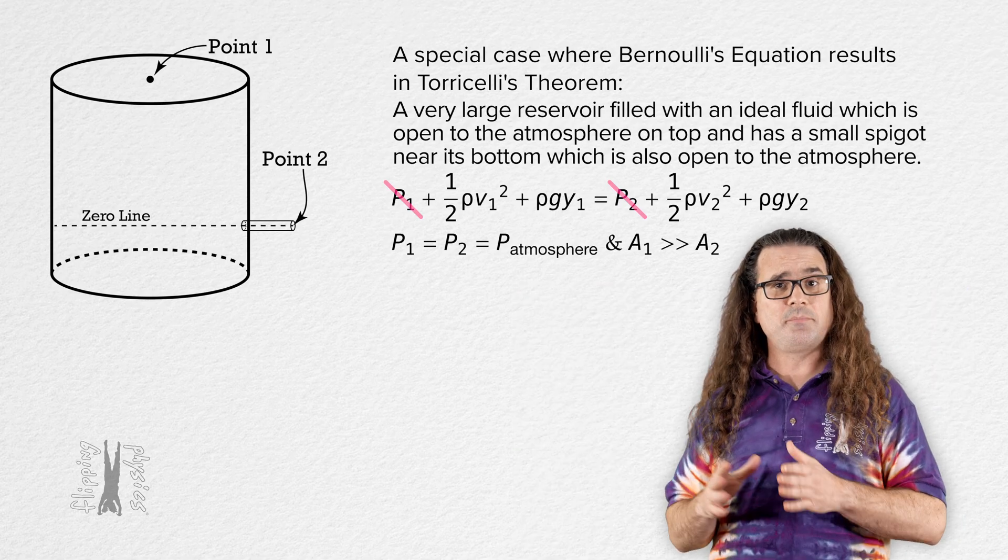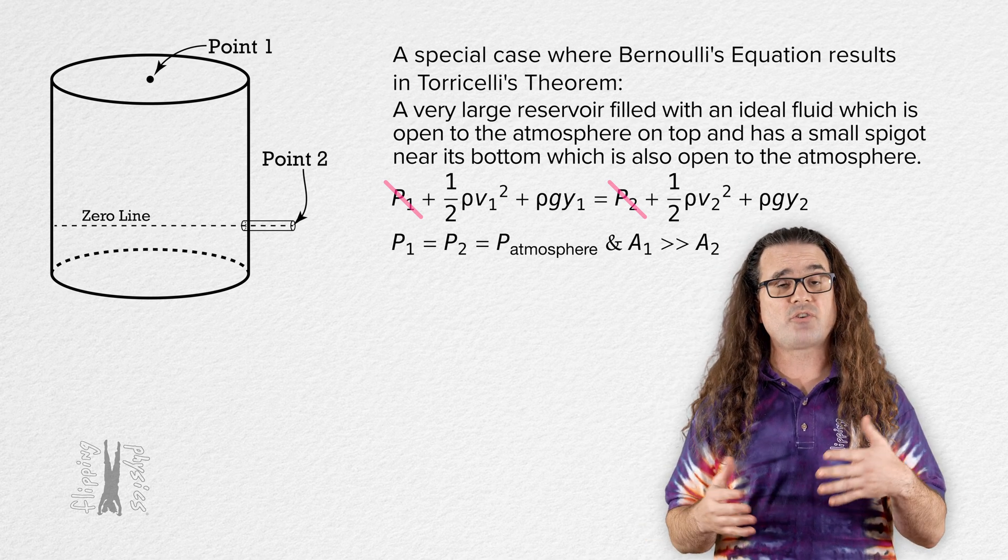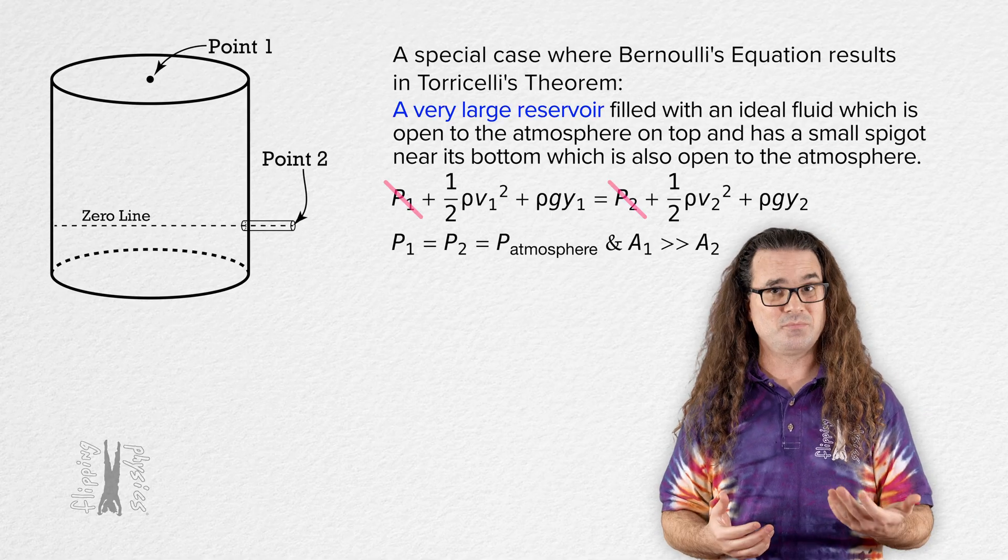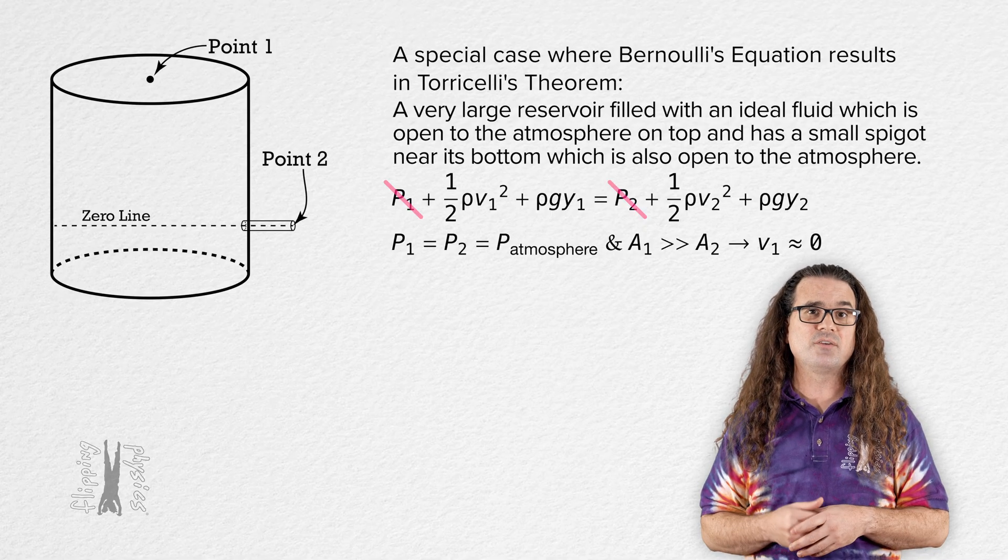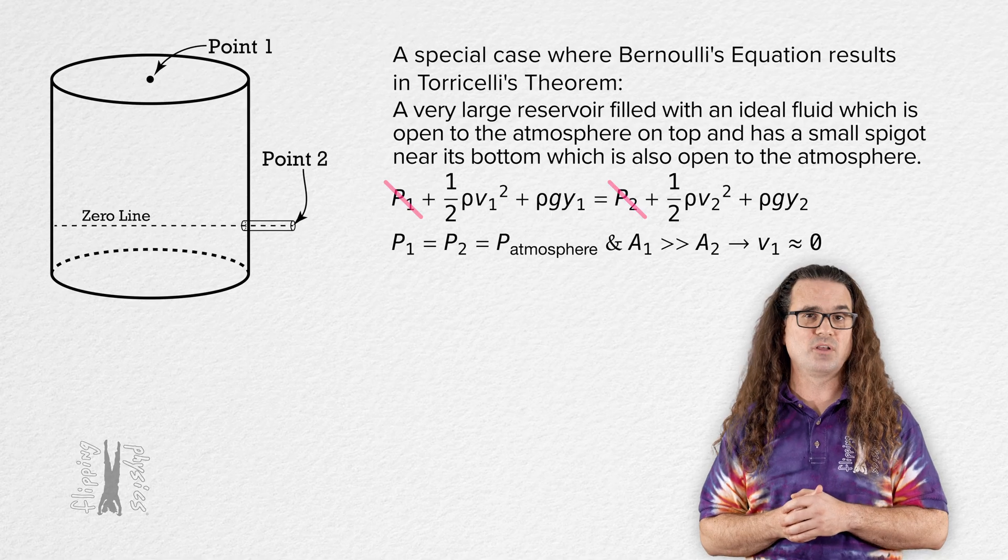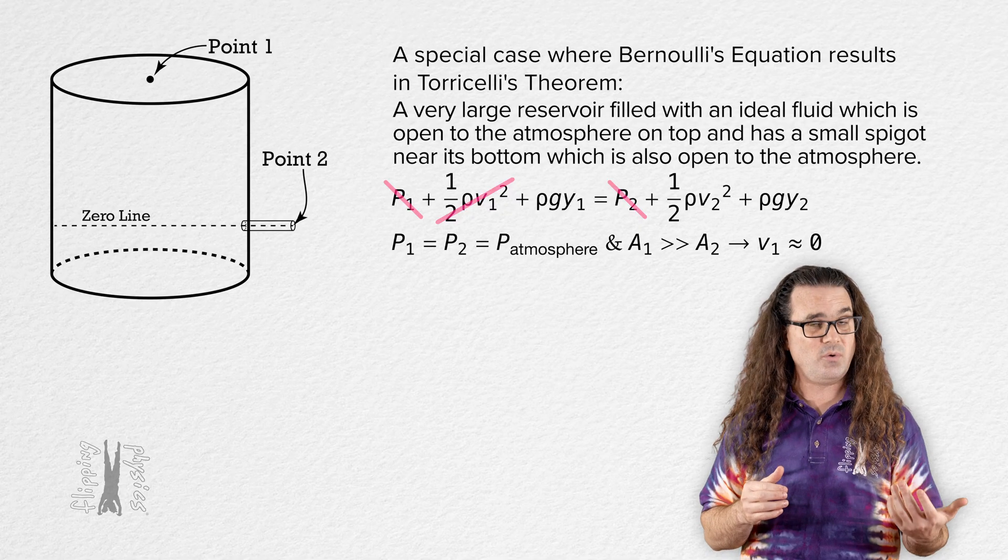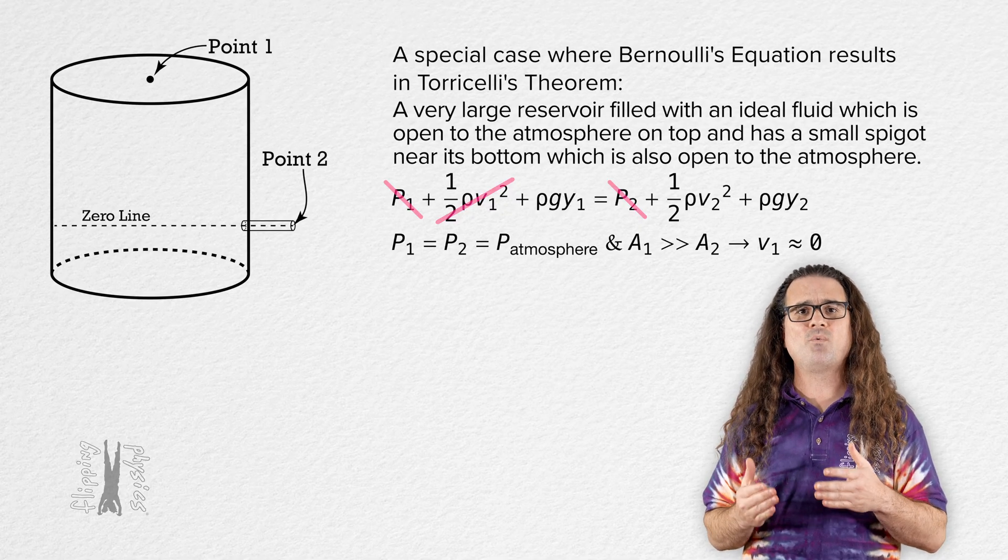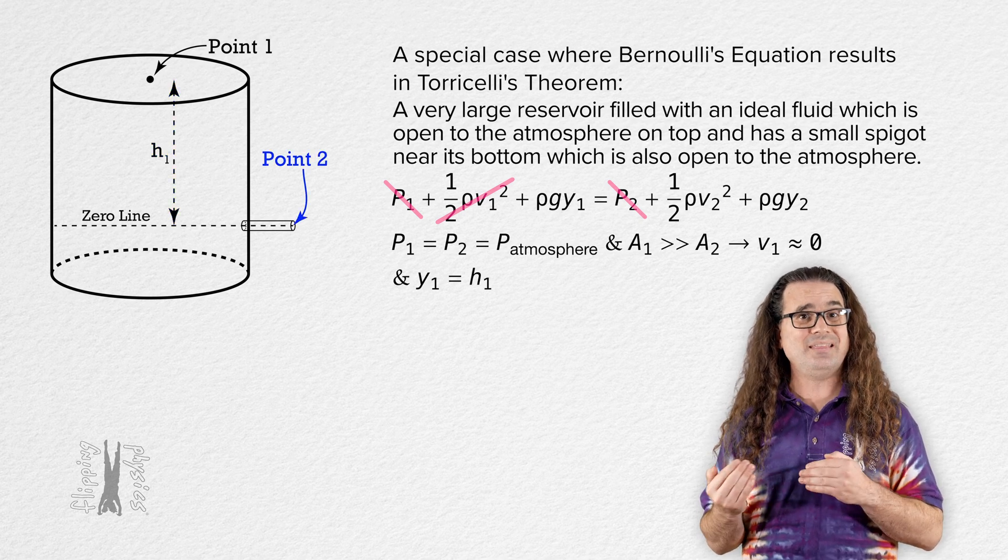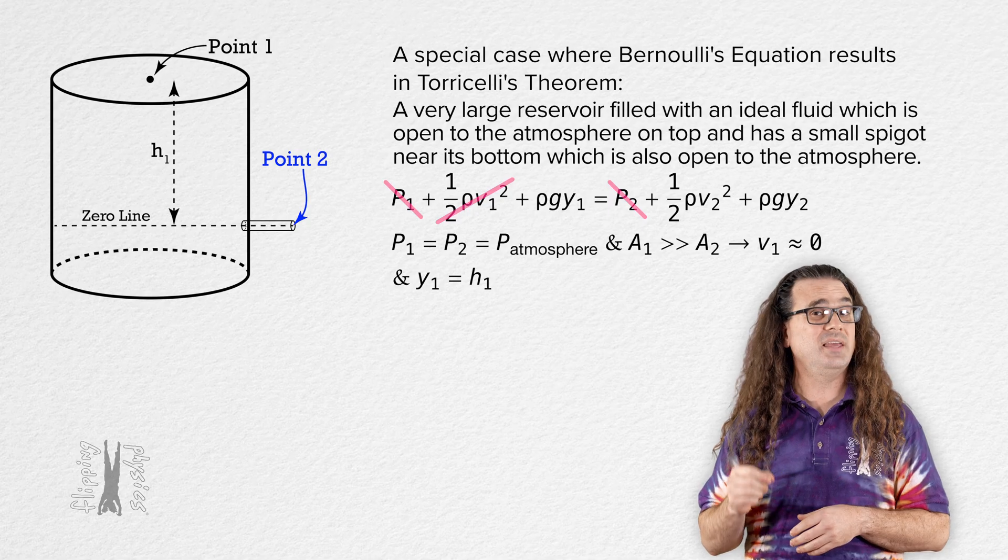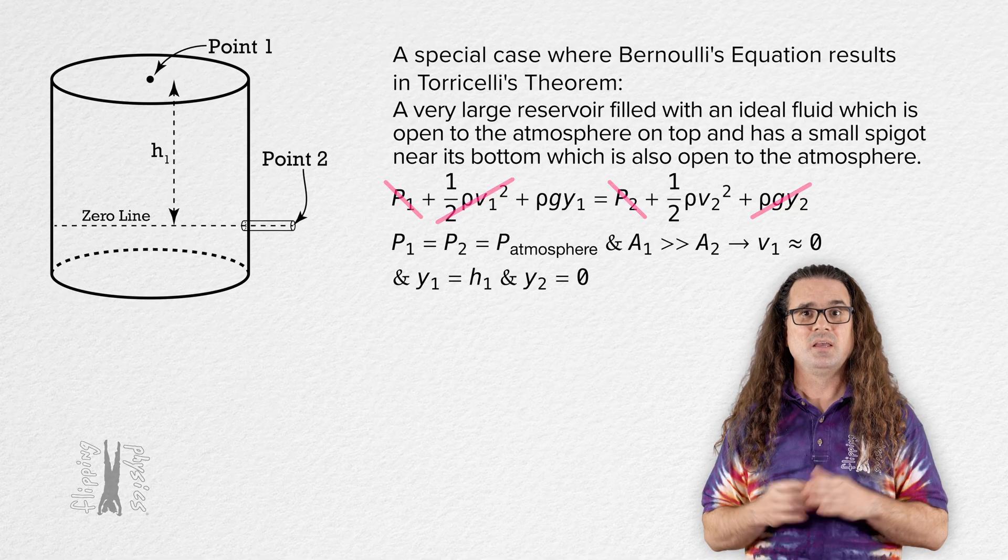And because cross sectional area at point 1 is much much larger than the cross sectional area at point 2, we know this because the reservoir is described as very large and the spigot is described as small, we can assume the speed of the fluid at point 1 is approximately equal to zero. The level of the fluid in the reservoir does not significantly change as fluid flows out of the spigot. That means we can cross the term with speed at point 1 in it out of the equation. And let's identify the height of point 1 above the horizontal zero line as h1. And we know point 2 is at the horizontal zero line so the vertical height of point 2 is zero. That means we can also cross out the term with vertical height at point 2 in it out of the equation.